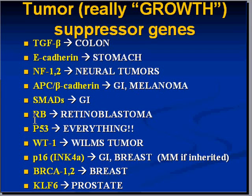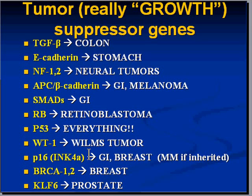RB, appropriately named — a mutation of the RB suppressor gene might wind up being retinoblastoma. P53, as we said, is a regulator at many different levels including apoptosis and the cell cycle, and its mutation winds up being most human cancers. The WT gene is appropriately named for Wilms tumor. INK4, the inhibitor of kinase in the cell cycle — if mutated, can give rise to GI and breast tumors. Interestingly, if the P16 INK4A complex mutation is inherited rather than acquired during life, it might classically wind up as malignant melanoma.